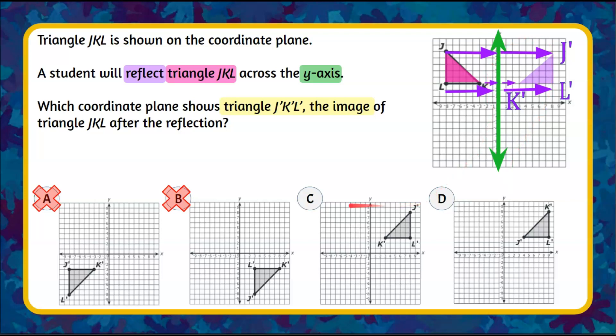I see in choice C that it's J-prime, K-prime, L-prime, and over here we have J-prime, K-prime, L-prime. So let's go up and compare.